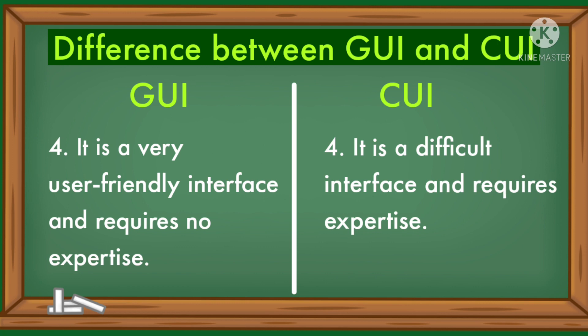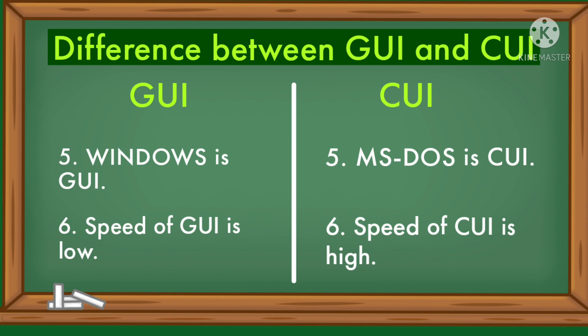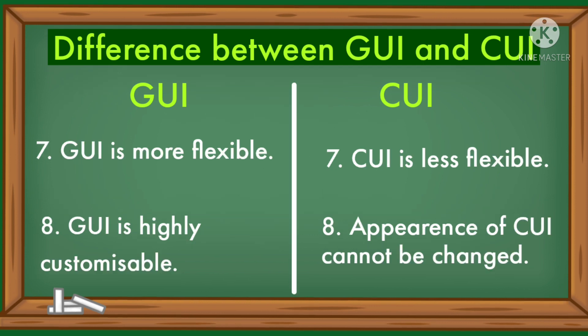GUI is a very user-friendly interface and requires no expertise. CUI is a difficult interface and requires expertise. Windows is an example of GUI; MS-DOS is an example of CUI. The speed of GUI is low, while the speed of CUI is high. GUI is more flexible, CUI is less flexible.